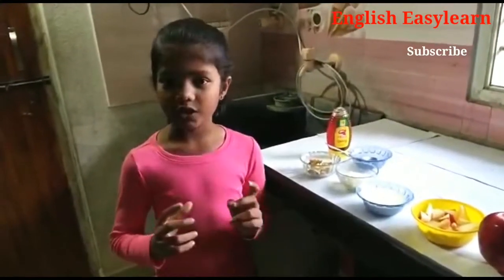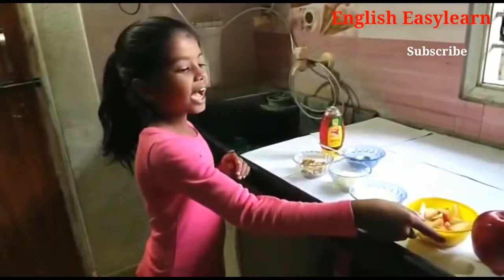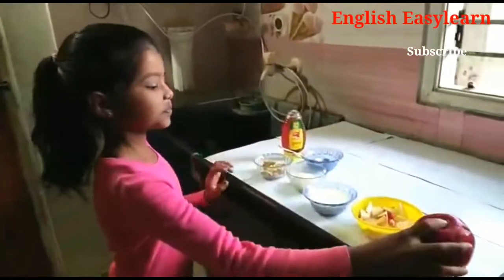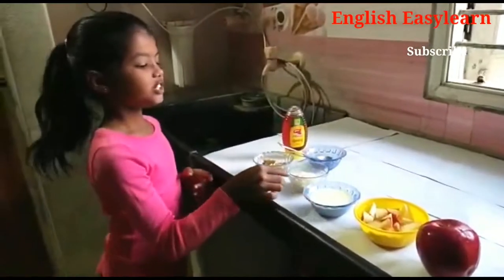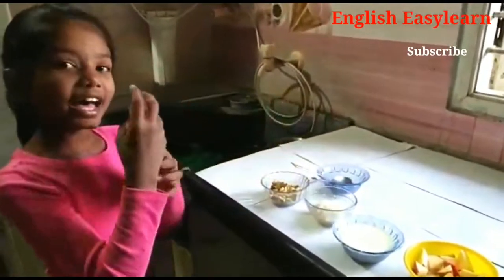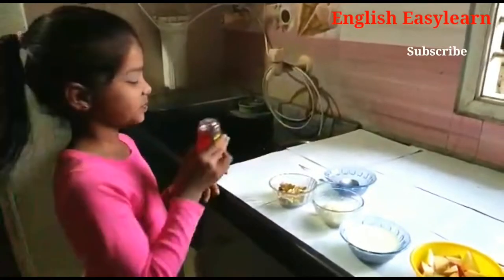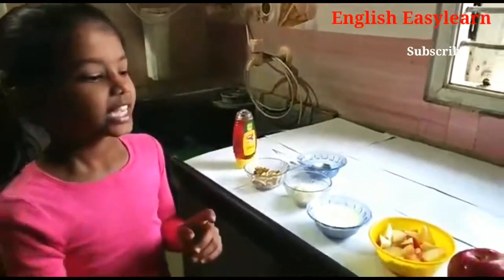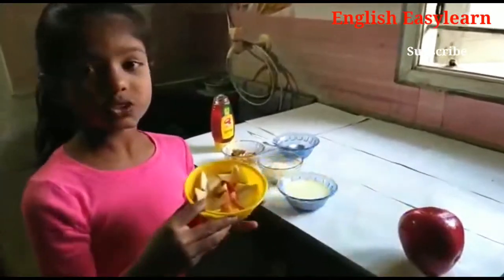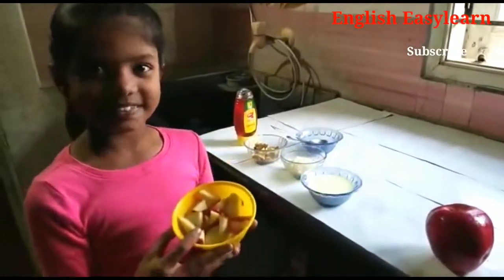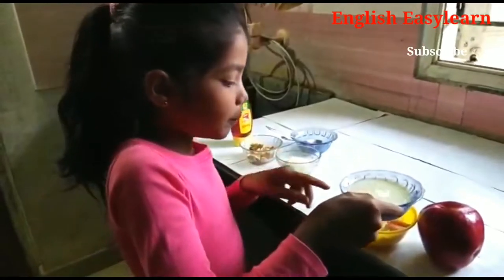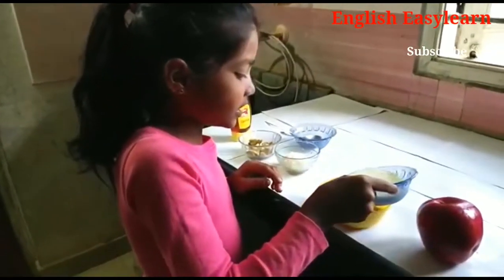Come, let us see what are the things required to make apple dessert: an apple, milk, sugar, a few dry fruits, and honey. First, take an apple and cut it into small pieces, and pour milk on it.